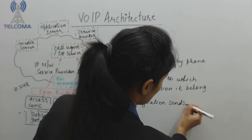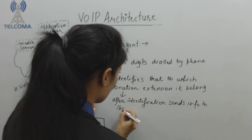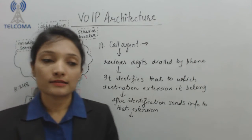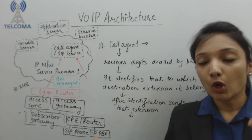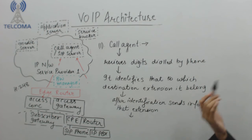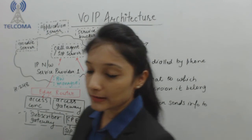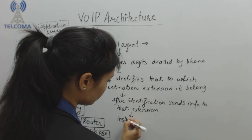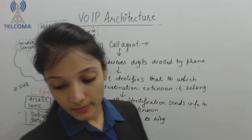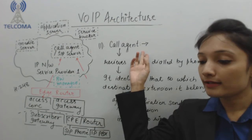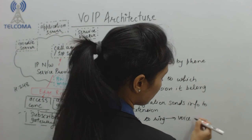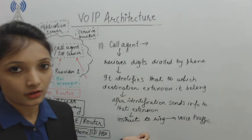After the destination is identified, the call agent sends information to that extension. If the destination is registered with the call agent, the call agent will instruct the phone instrument to send out the ring signal. After identification is done it finds that yes, it is registered, and then it instructs the phone to ring. After the rings are played and when the destination person answers the phone, the call agent instructs the phone to send the voice traffic.